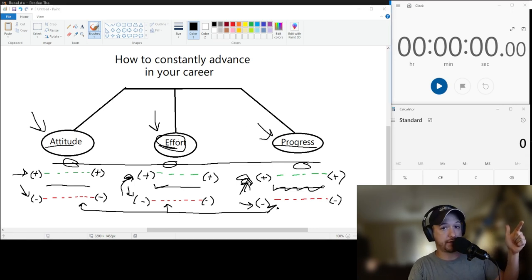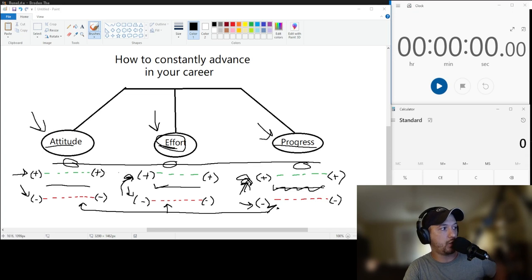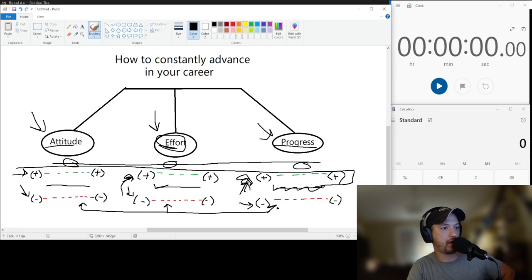So that is my speed run of how to constantly advance in your career. Because if you are in the top, you will advance over time or a long period of time. It may not be at the pace that you maybe perceive as what you want to do.